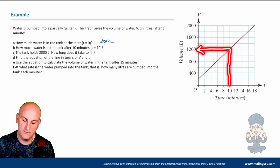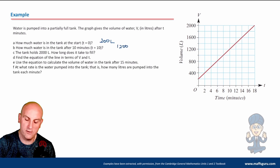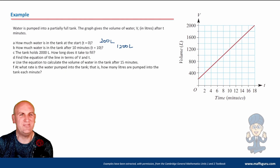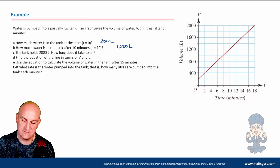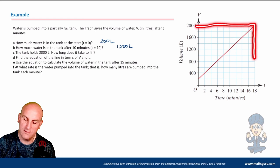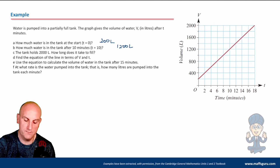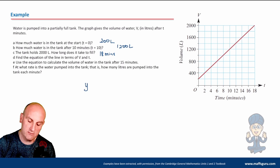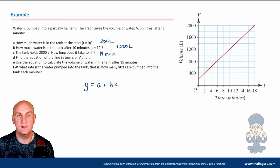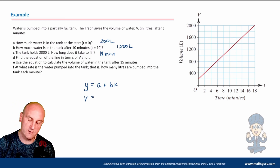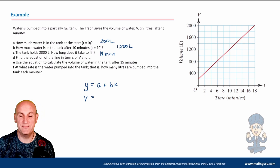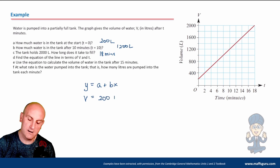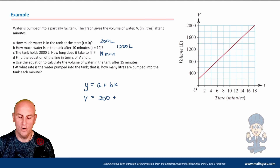The tank holds 2000 liters — how long does it take to fill? Find 2000 liters on the graph, go across, read off the time: 18 minutes. You're just reading information off the graph. Now, find the equation of the line in terms of v and t. The general equation is y = a + bx, but we can't use y — we have v. So v = a + bt. The intercept a is 200, which we already found.